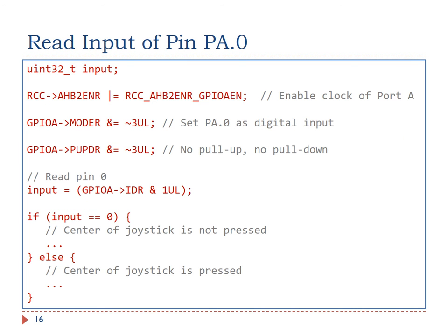This slide summarizes the software code which reads the input of the center switch of the joystick. Note that the center terminal of the joystick is connected to pin 0 of port A. The software involves four steps. First, we turn on the clock to enable port A. Then, we set the mode of pin 0 as digital input. Next, we select no pull-up and no pull-down for pin 0. Finally, we read bit 0 using bitwise AND. If the bitwise result is 0, then the center of the joystick is not pressed; otherwise, it is pressed.